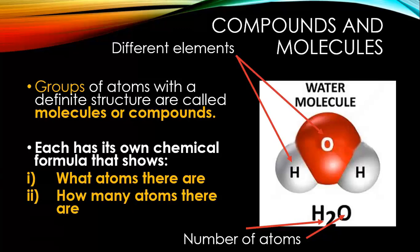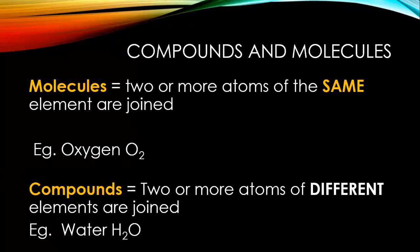Let's talk about compounds and molecules. Groups of atoms with a definite structure are called molecules or compounds. There's a difference between the two. Each has its own chemical formula that shows what atoms there are and how many. For example, H2O has two atoms of hydrogen and one atom of oxygen. Molecules are two or more of the same element joined together, like O2. Compounds are two or more of the same or different elements joined together, like H2O. You need to know the difference between molecules and compounds.